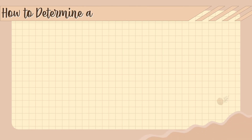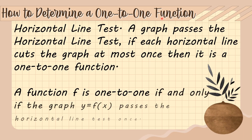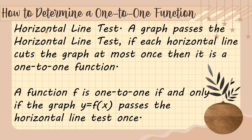To determine a one-to-one function, we use the horizontal line test. A graph passes the horizontal line test if each horizontal line cuts the graph at most once — then it is a one-to-one function. A function f is one-to-one if and only if the graph y = f(x) passes the horizontal line test.